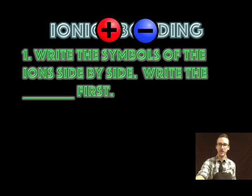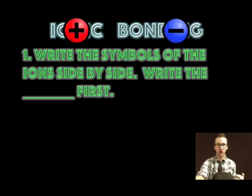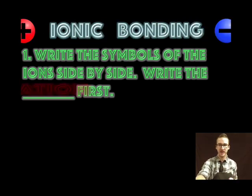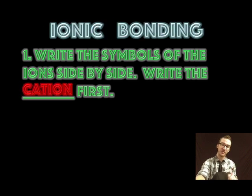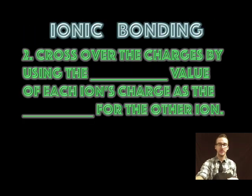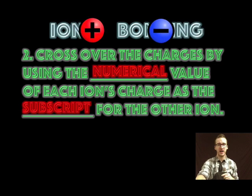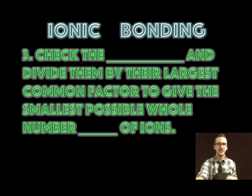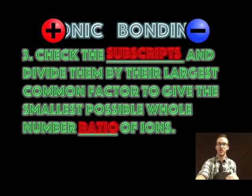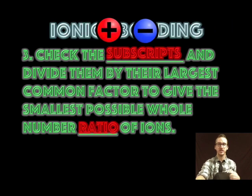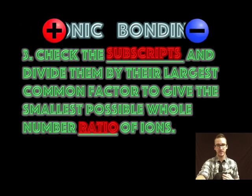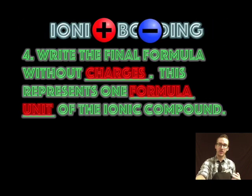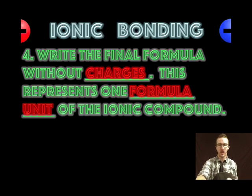Now how do we write the formulas for these ionic compounds? It's a step-by-step process. First thing we're gonna do is write the symbols of the ion side-by-side. Always write your cation first. Positive ion typically your metal. To cross over the charges by using the numerical value of each ion's charge as the subscript for the other ion. Step three. Check the subscripts and divide them by their largest common factor to give the smallest possible whole number ratio of ions. You're gonna write your final formula without charges. That is gonna represent one formula unit of the ionic compound.